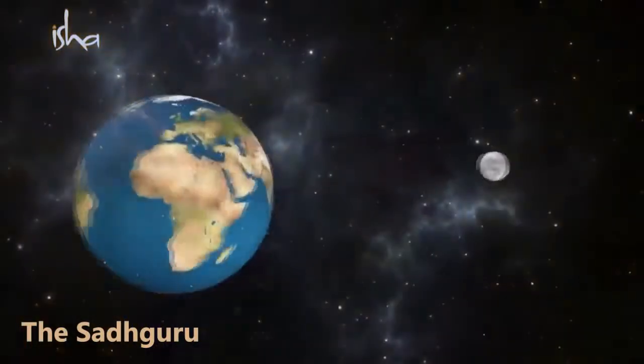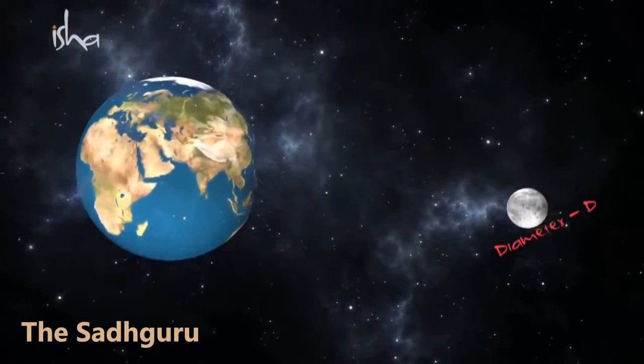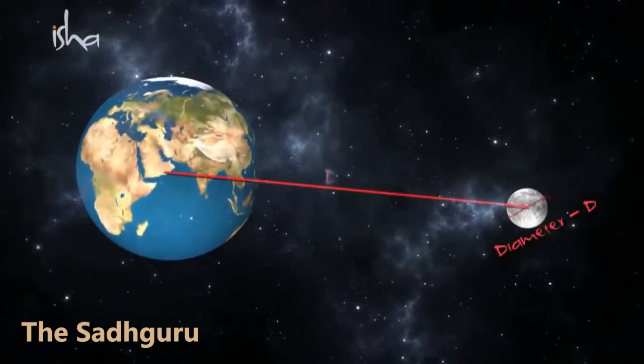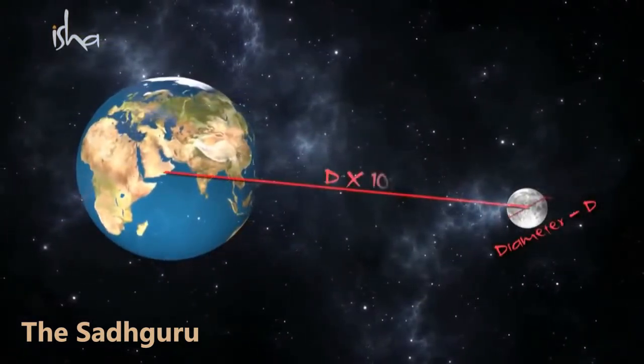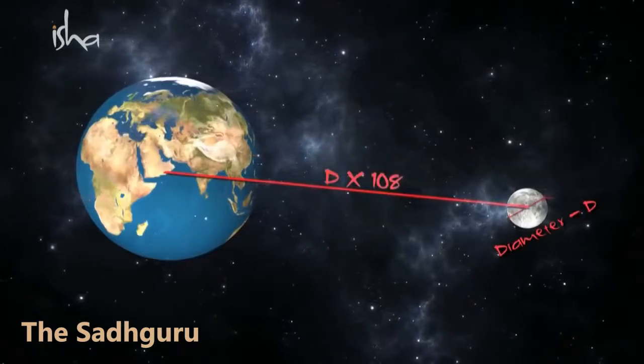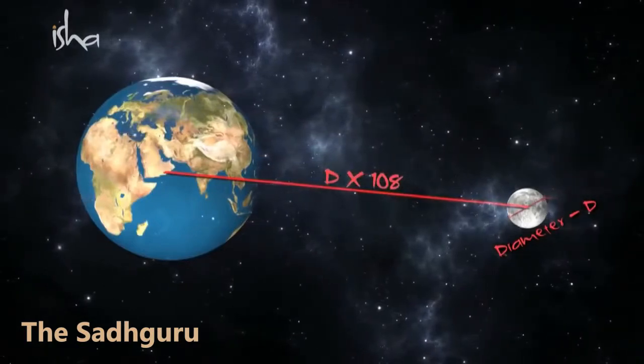This is today's measurement — it goes exactly like that. The diameter of the moon multiplied by 108 equals the distance to the Earth. You know where we put 108 beads — I can go on with all kinds of fabulous figures.